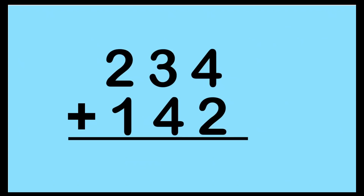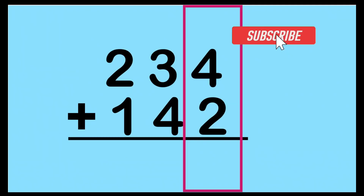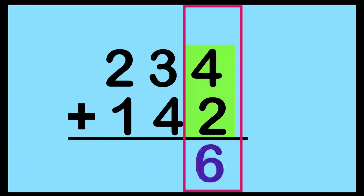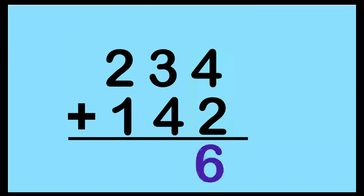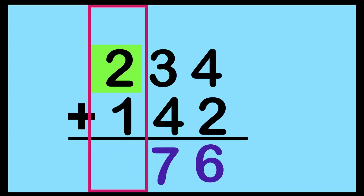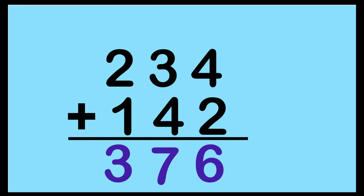Always remember, children, in adding numbers, you're going to start at the one's place. So 4 plus 2 — put 4 on your mind, big number first: 4, 5, 6. We have 6. Then let's proceed to the next place value: 3 plus 4 gives us 7. Then at the hundred's place, 2 plus 1 gives us 3. So the sum of 234 and 142 is 376.